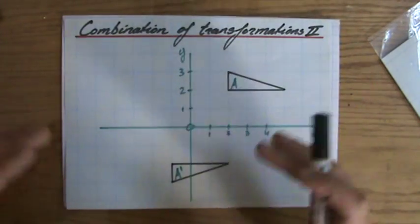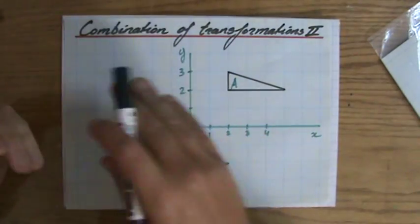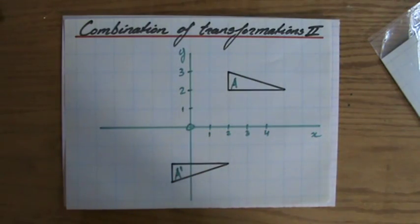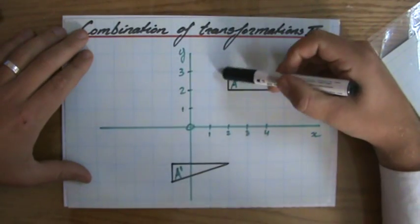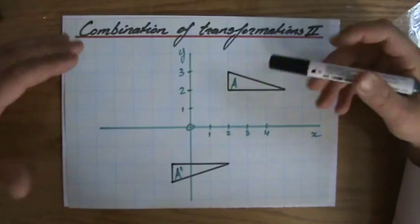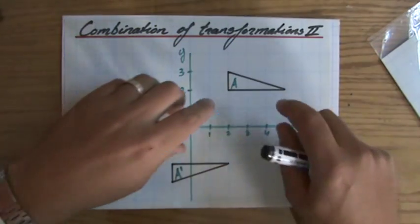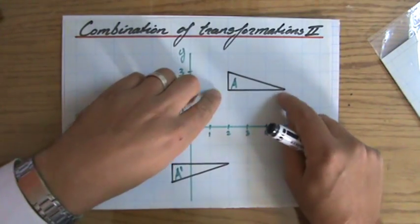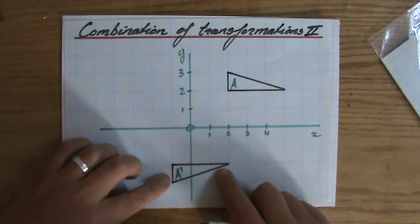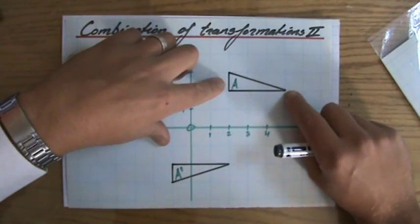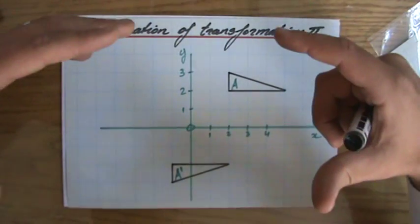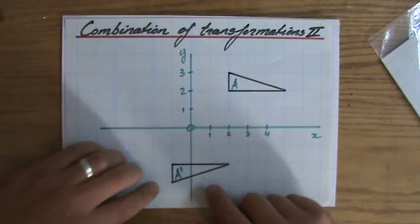Excellent that you are here, because this is the type of question you can expect when we're talking about combinations of transformations. They have a particular image A, and then they will ask you which combination of transformations maps image A onto A apostrophe. So it was first A, after a combination of transformations it is A apostrophe.